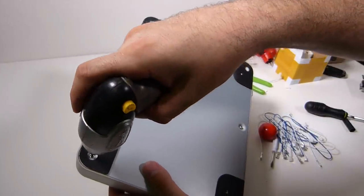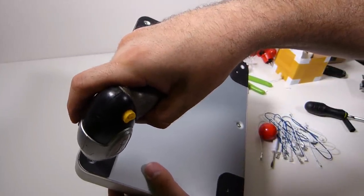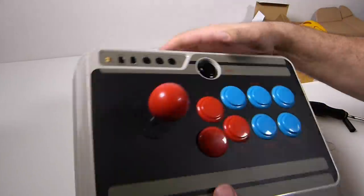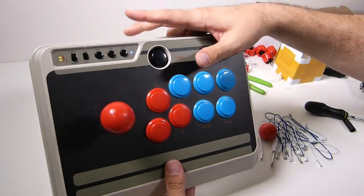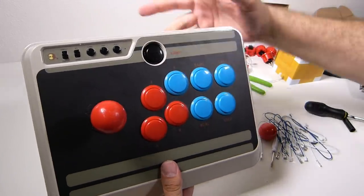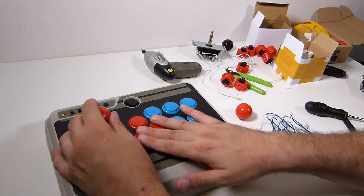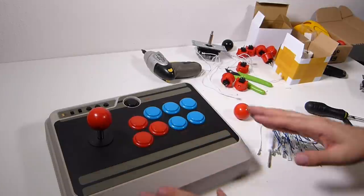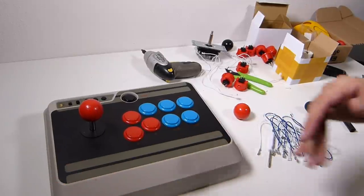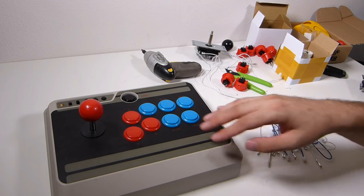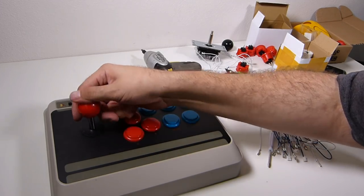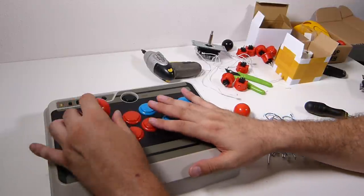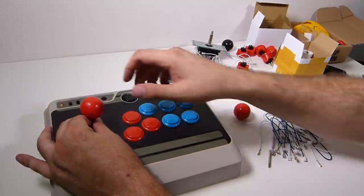So with this, I'm going to use actual Sanwa buttons. For some reason, the buttons that came with it, they're trying to mimic Sanwas, but the throw on hitting the micro switch and registering is way off to me compared to a Sanwa button where a Sanwa button, you barely touch it and it registers. And then we also have the blue button is an actual Sanwa button.